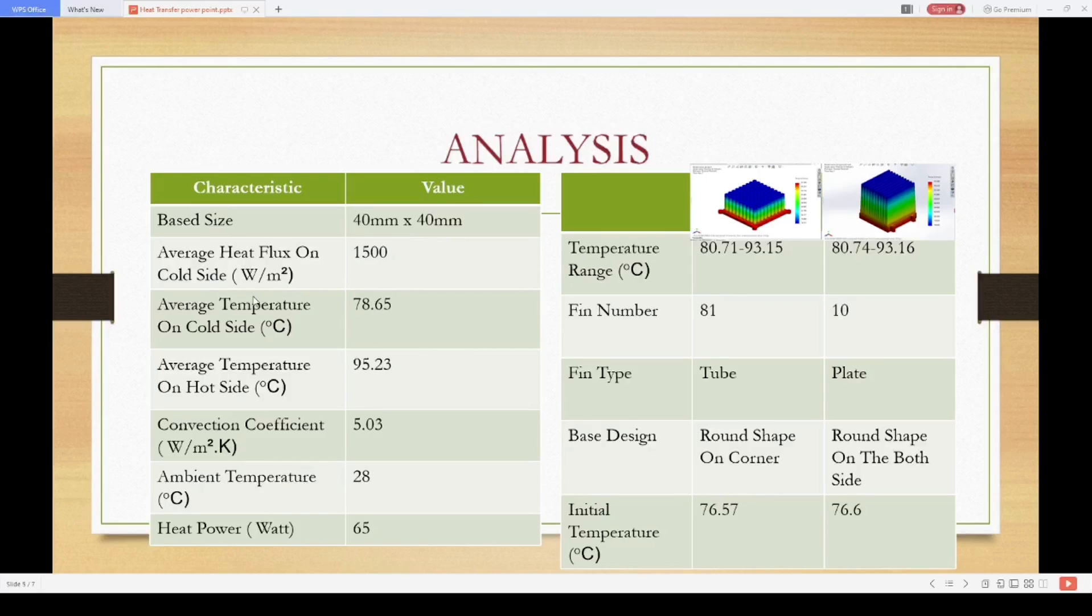The average temperature on cold side is 78.65 degrees Celsius and the average temperature on hot side is 95.23 degrees Celsius. The convection coefficient is 5.03 watts per meter squared Kelvin. The ambient temperature is 28 degrees Celsius and the heat power is 65 watts.